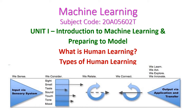In this machine learning class we will see what is human learning and types of human learning. These topics come under the first unit: introduction to machine learning. We will also cover the organ systems that support human learning, the three types of machine learning, and we will see all those things one by one.